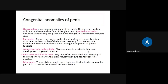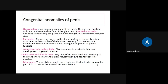Agenesis means absence of the penis or clitoris — the genital tubercle is not developed. Bifid penis or double penis is quite rare and is often associated with exstrophy of the bladder; the genital tubercles form two separate structures leading to a bifid or double penis. Micropenis is where the penis is quite small and is usually hidden in the suprapubic pad of fat, typically because of fetal testicular failure.